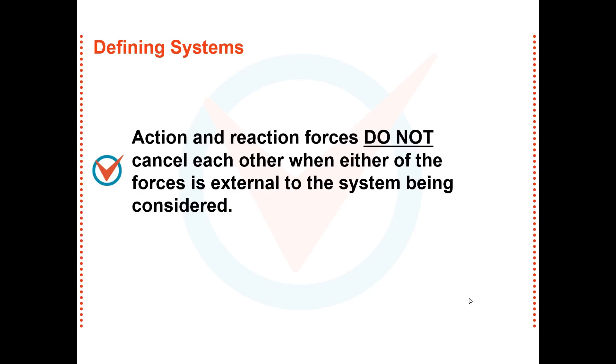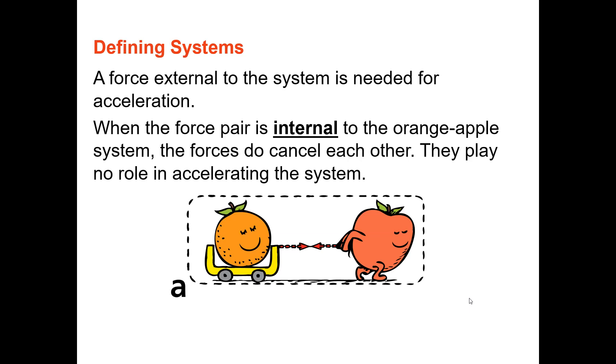Action and reaction forces do not cancel each other if one of the forces is external to the system being considered. But a funny thing about systems is they're arbitrary. What you call the dotted line is really up to you. And if you change the dotted line, the boundary of the system, then you change the way you look at it, and something else might be happening. So let's look at this system like this.